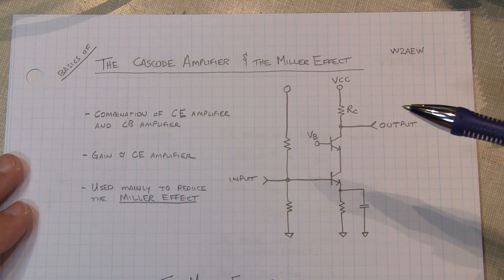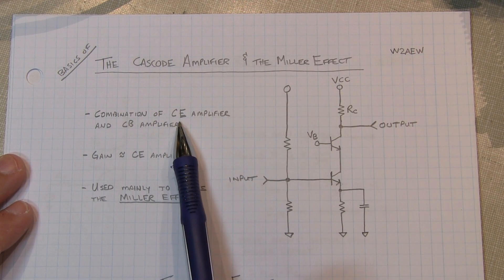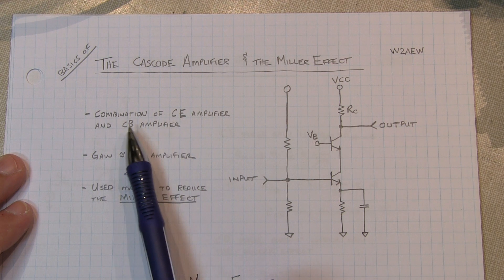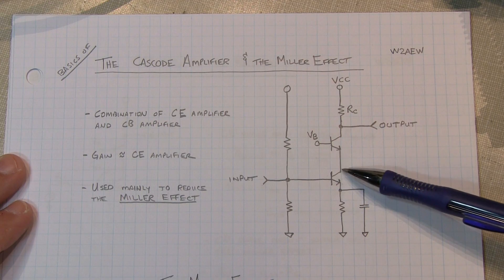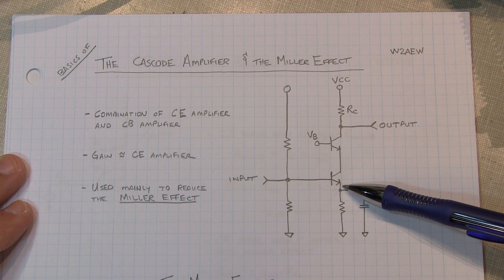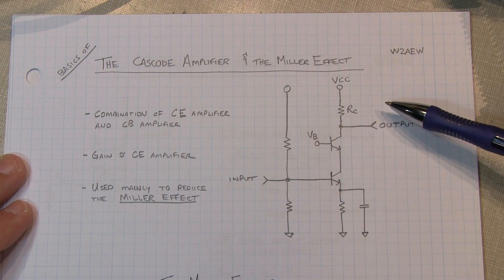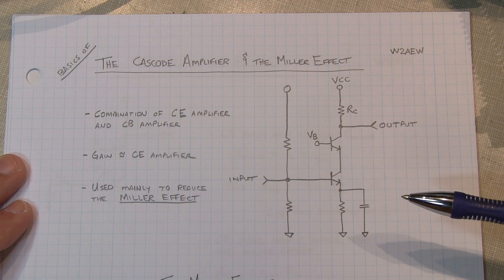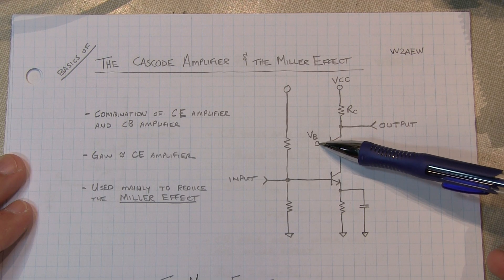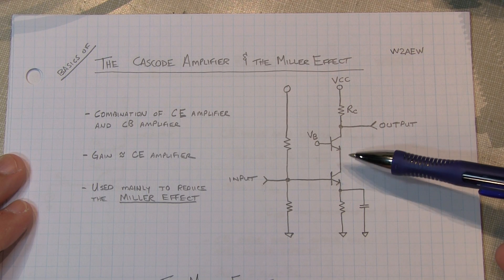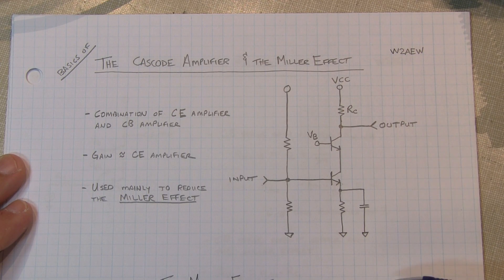So what is the Cascode amplifier? A Cascode amplifier is really just a combination of a common emitter amplifier followed by a common base amplifier. This transistor here is the common emitter amplifier. In fact, if we shorted this transistor out here, we'd recognize this thing as a basic common emitter amp. Now, this transistor is the common base amplifier where the base is essentially biased to a fixed voltage, and we apply the input into the emitter and take the output from the collector.